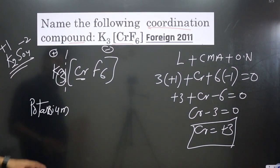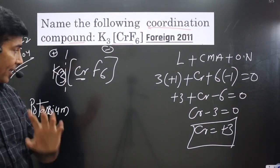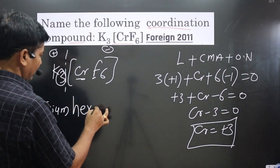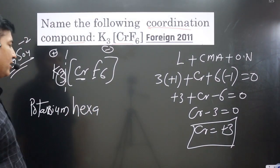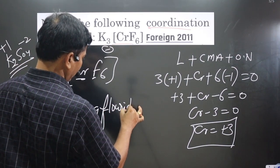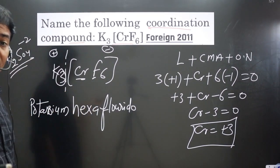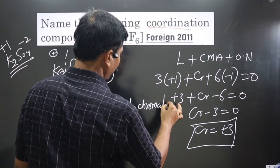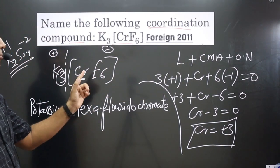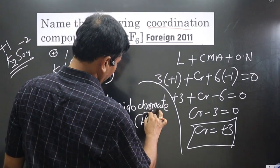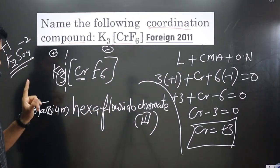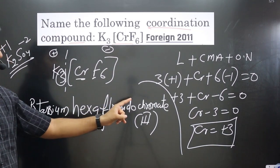For the complex itself: there is one type of ligand — fluoride — with six of them, so we use the prefix 'hexa' and name it 'fluorido,' giving 'hexafluorido.' The central metal, chromium, is in an anionic complex, so we write 'chromate.' The oxidation number is +3, written as Roman numeral III. The complete name is: potassium hexafluoridochromate(III).